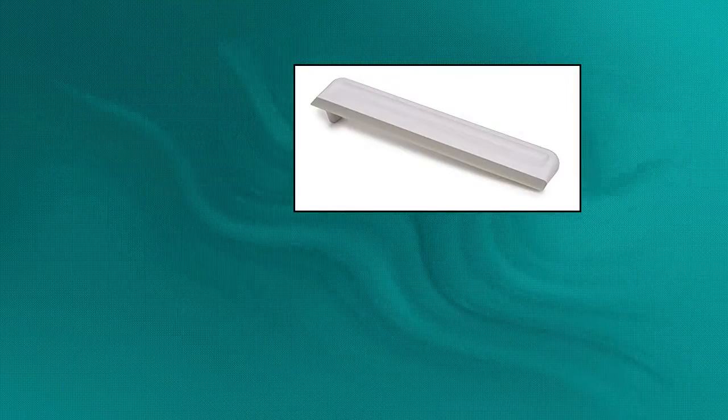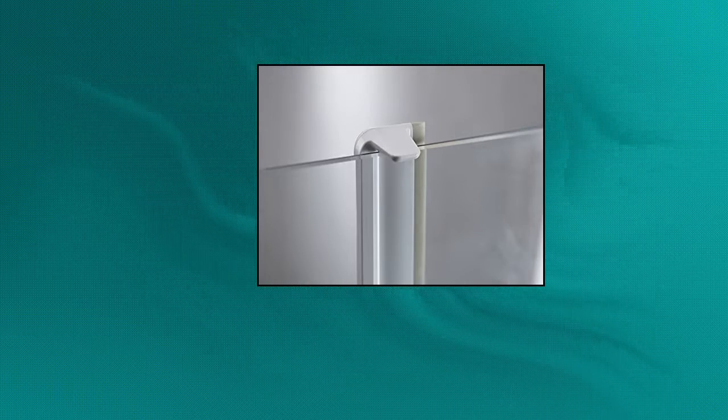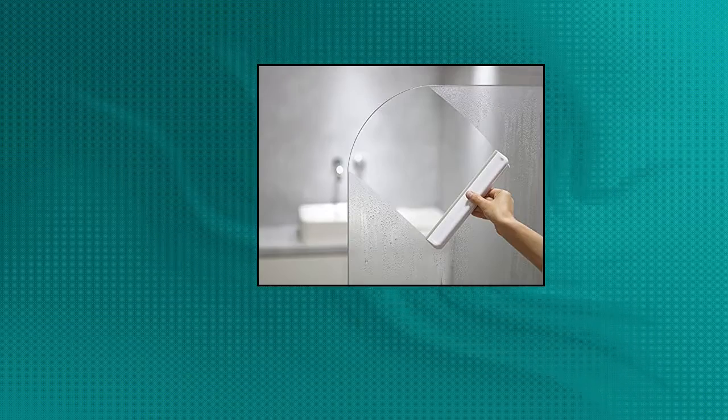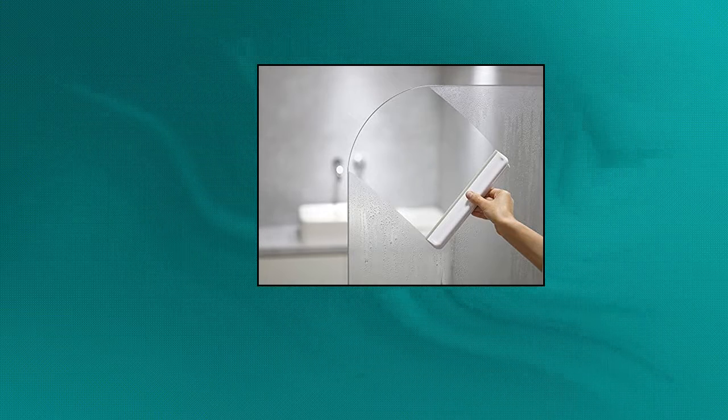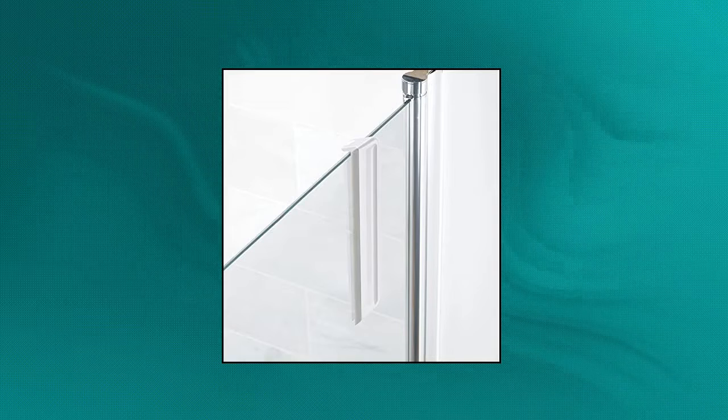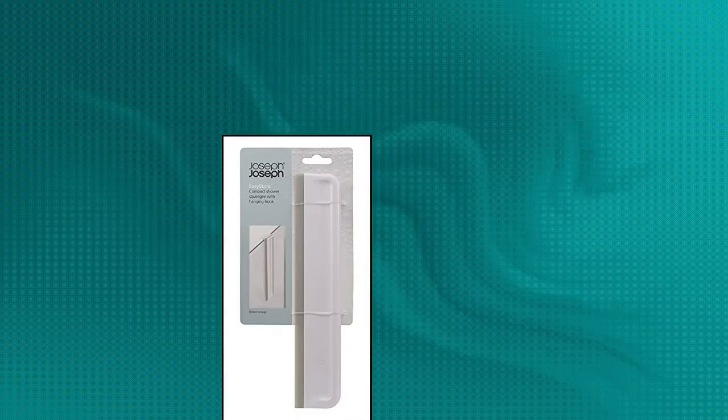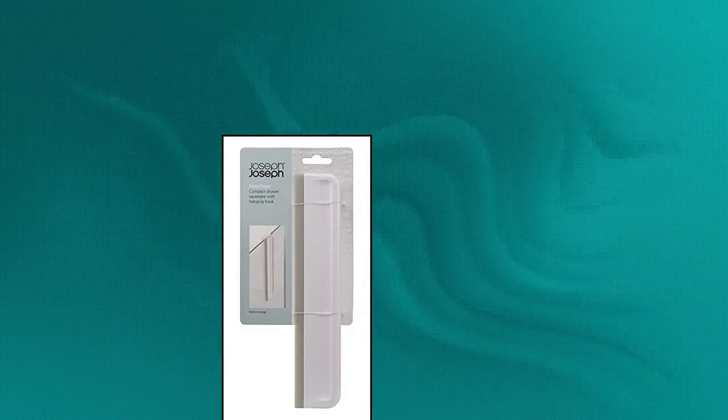Joseph Joseph Easy Store Compact Shower Squeegee with Integrated Hanger. Flexible silicone blade for precision cleaning. Ideal for flat and curved surfaces. Features a handy hook for hanging storage over shower screen or shelf. Suitable for wiping shower screens, mirrors and tiles. Neat, slimline design. Blade size: 10 inches. Joseph Joseph Easy Store Compact Shower Squeegee with Integrated Hanger, 1 size.